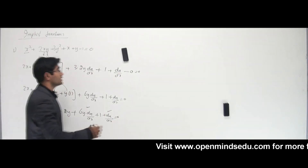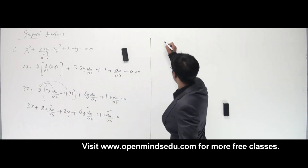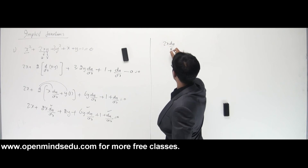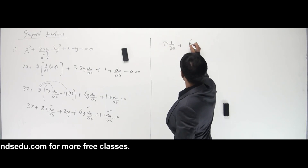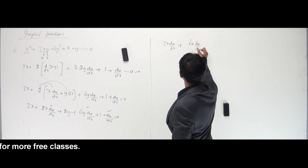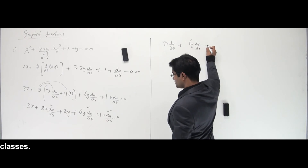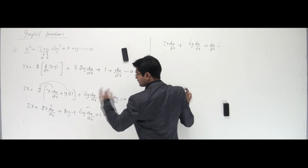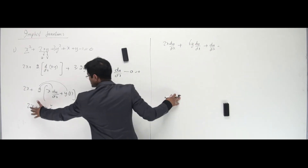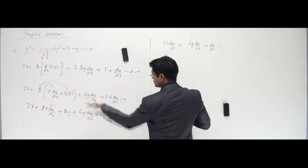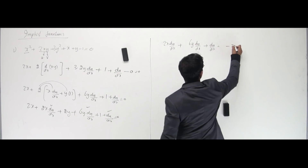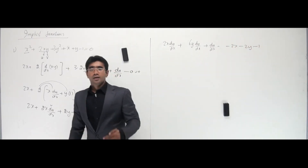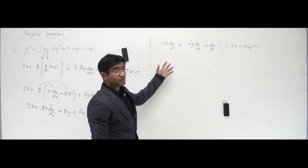What I'm looking for is dy/dx, so keep all terms containing dy/dx on the left hand side. Opening the brackets: 2x plus 2x(dy/dx) plus 2y plus 6y(dy/dx) plus 1 plus dy/dx. So I'll keep the dy/dx terms — 2x(dy/dx), 6y(dy/dx), and dy/dx — on the left hand side, and put 2x, 2y, and 1 on the other side as negatives.